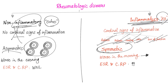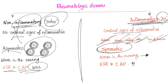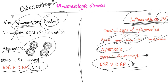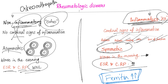Inflammatory arthritis is worse in the morning because as the day progresses, you are washing out the inflammatory debris, improving your symptoms. In non-inflammatory arthritis, the ESR and CRP are within normal limits because it's non-inflammatory. So 'osteoarthritis' is actually a wrong name — we should call it osteoarthropathy. On the other hand, with inflammatory arthritis, ESR and CRP are increased because these are inflammatory markers.